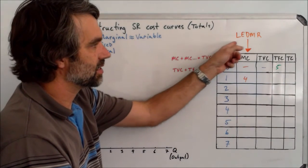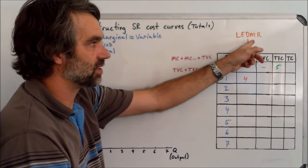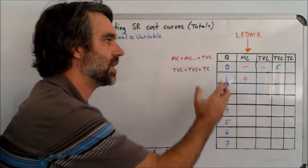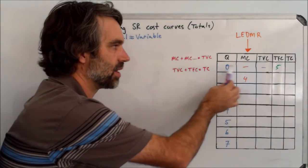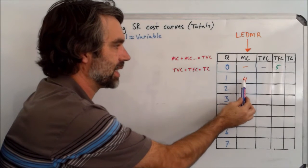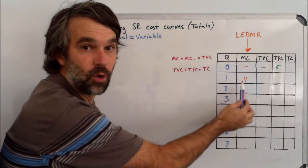This is the only assumption we're making is the law of eventually diminishing marginal returns. So we don't see any marginal cost when the quantity is zero, obviously. But when we produce the first one, let's say that our marginal costs are going to be four.